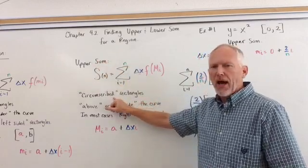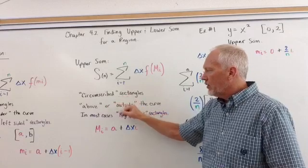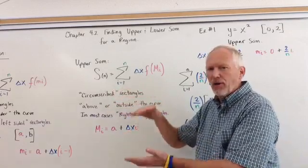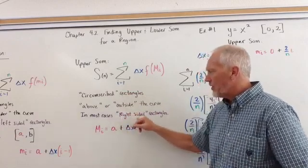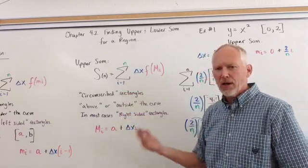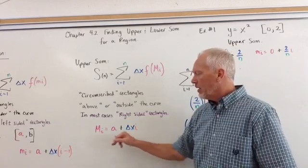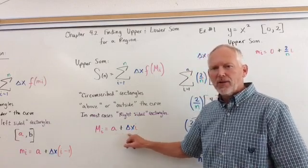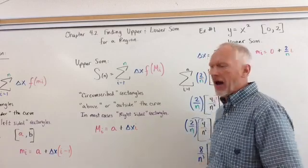These are circumscribed rectangles, or they're above. So these are not under the curve, they're over and above the curve. In most cases, these are right-sided rectangles. There are some situations where they're not. And capital M sub i is a plus the change in x times i.